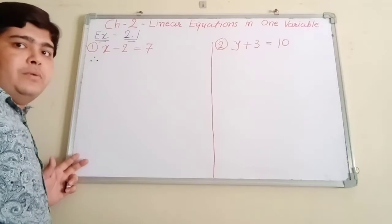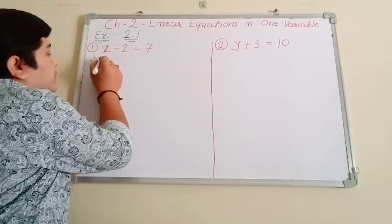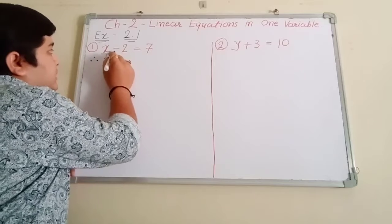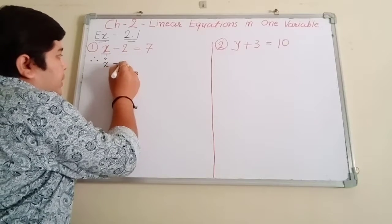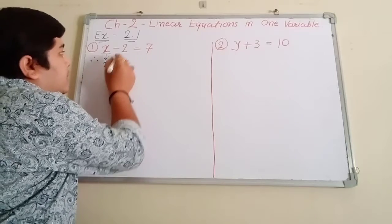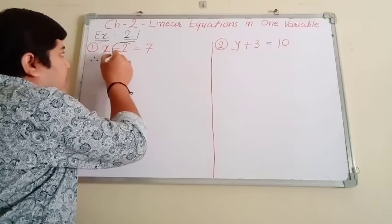Three dots, right. So we will, as it is, write x here, same minus also here, two also here. After that...